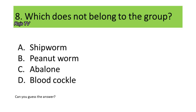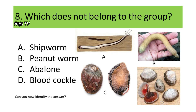If you are not familiar with these organisms, here are the photos — A. Shipworm, B. Peanut Worm, C. Abalone, D. Blood Cockle. Can you now identify the answer? If not, here is another hint. These organisms can be grouped into two phyla: Phylum Sipuncula and Phylum Mollusca. Can you now guess the answer?